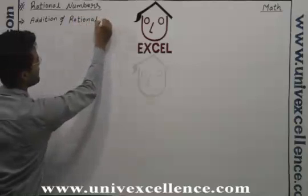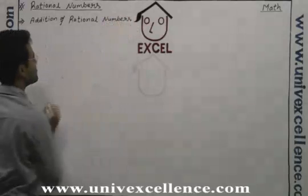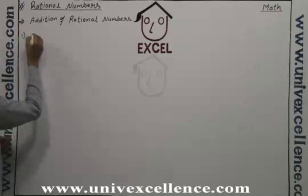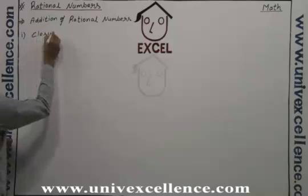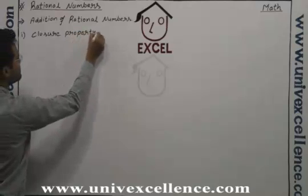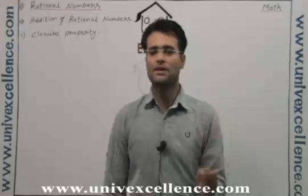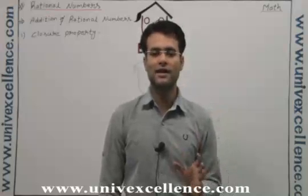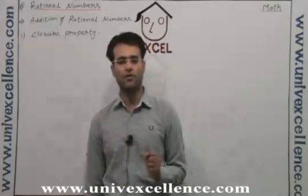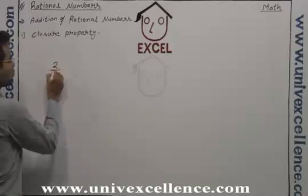Addition of rational numbers. First, we will talk about the closure property. The closure property says that a rational number plus a rational number should result in a rational number. If this is satisfied, then the closure property is followed.